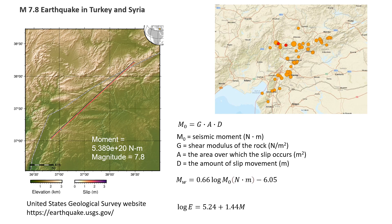The information I'm going to use is available on the United States Geological Survey website. I'm going to use a few formulas shown here on the slide. This is the formula to estimate the seismic moment, and we're going to use Newton-meters as units. This information is also given on the USGS website — they already estimated the seismic moment as 5.38 times 10 to the power of 20 Newton-meters, and the magnitude of this earthquake was 7.8.